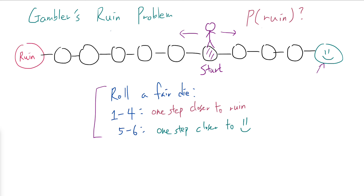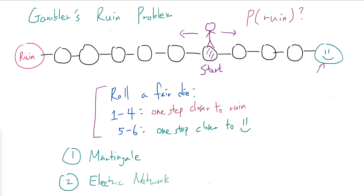The game continues until we either get ruined or hit the smiley face, and we're trying to find the probability of ruin. Among many different possible solutions, I want to present the two I find really elegant. The first approach is going to use martingales, and the second approach is going to use electric networks — a circuit with resistors and batteries — and it turns out there is a very close connection between certain electric quantities and probabilistic quantities when you consider random walk on a network.